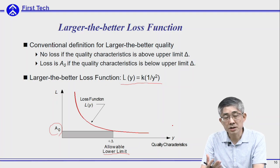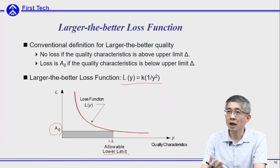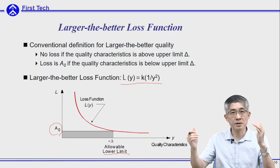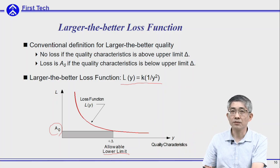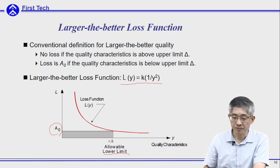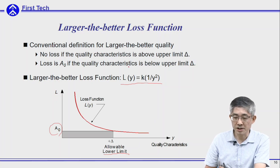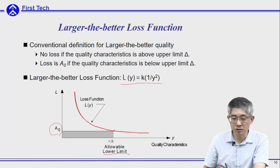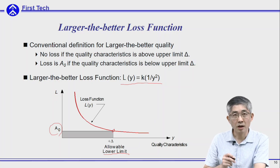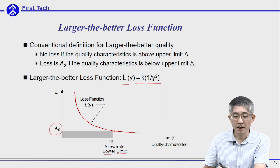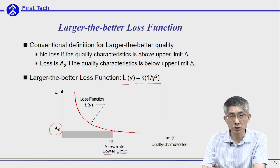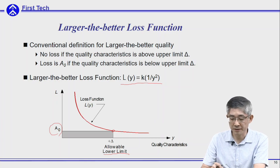This gives a continuous curve that can better describe the larger-the-better case and avoids the discontinuity problem of the conventional criteria. Again, he asks this curve to pass through the control point of the conventional criteria, and you substitute this point into the equation to get the coefficient K.